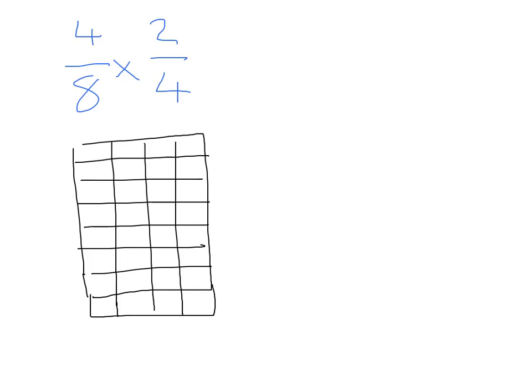So four-eighths would be, we're going to color in. That's one-eighth, two-eighths, three-eighths, and four-eighths. And my second fraction, again, travels in a vertical manner. So again, two-fourths. So I'm going to start crossing out two-fourths.